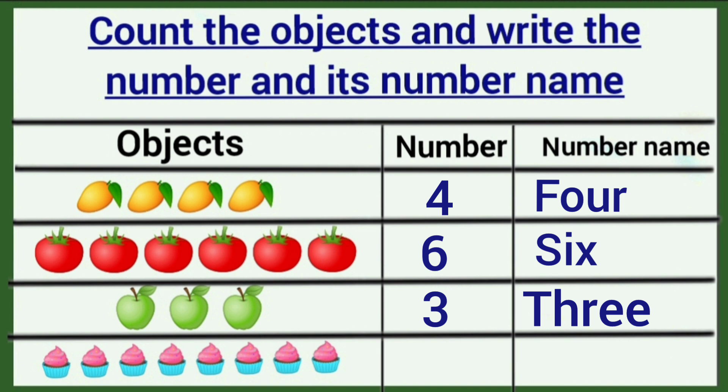Next, how many cakes are here? Let's count. One, two, three, four, five, six, seven, eight. Eight, eight spelling, E-I-G-H-T.